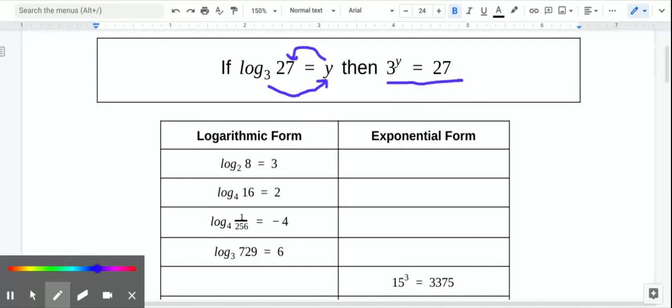Let's practice with this. We have log base 2 of 8 equals 3. So what you're thinking is 2 to the 3rd equals 8. These mean the same thing. They're just written in two different forms.